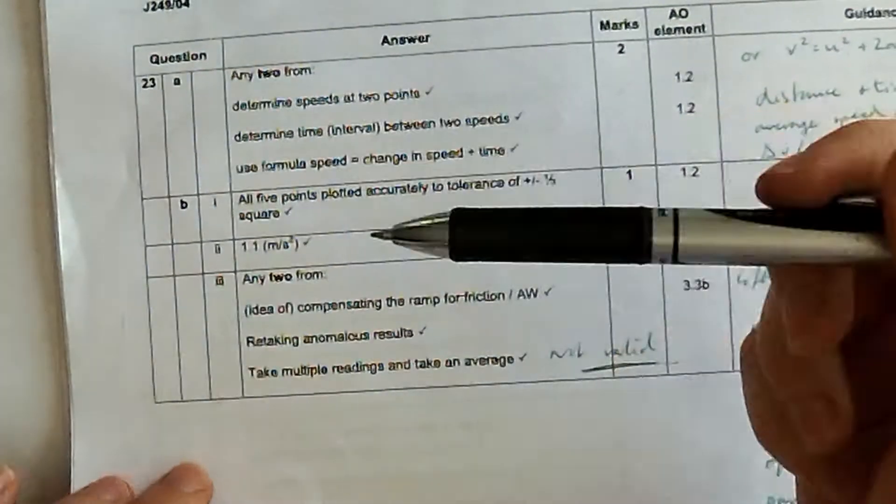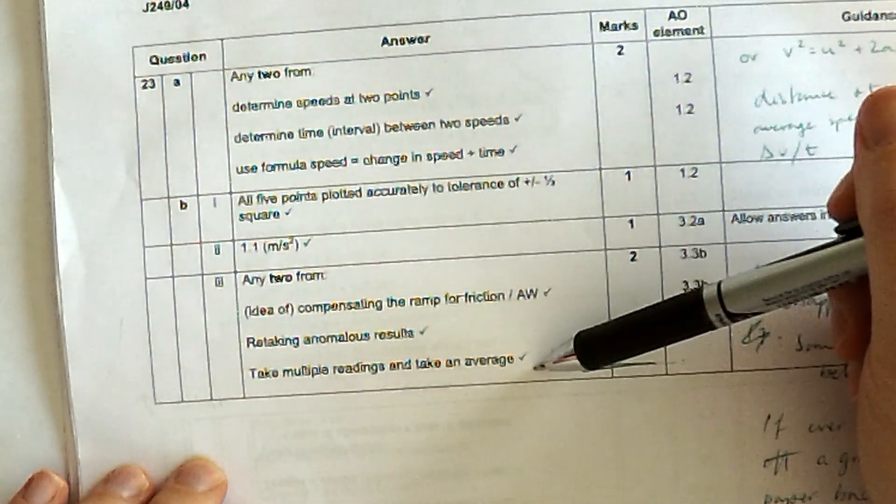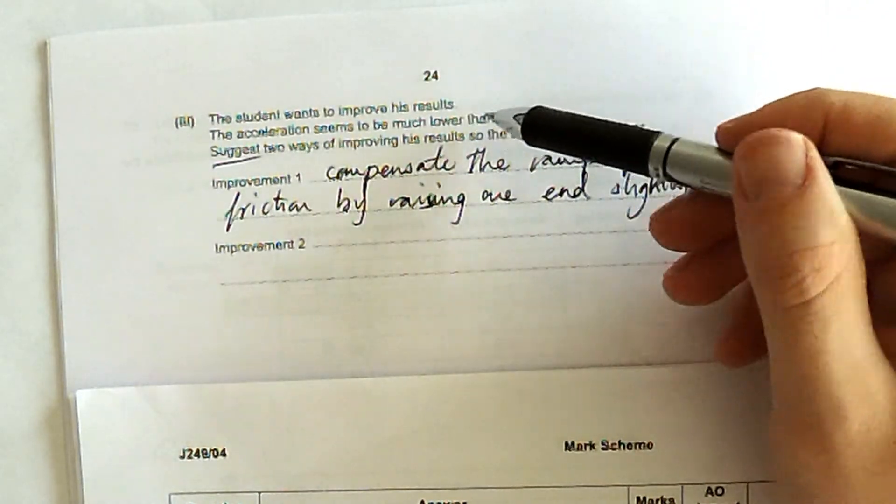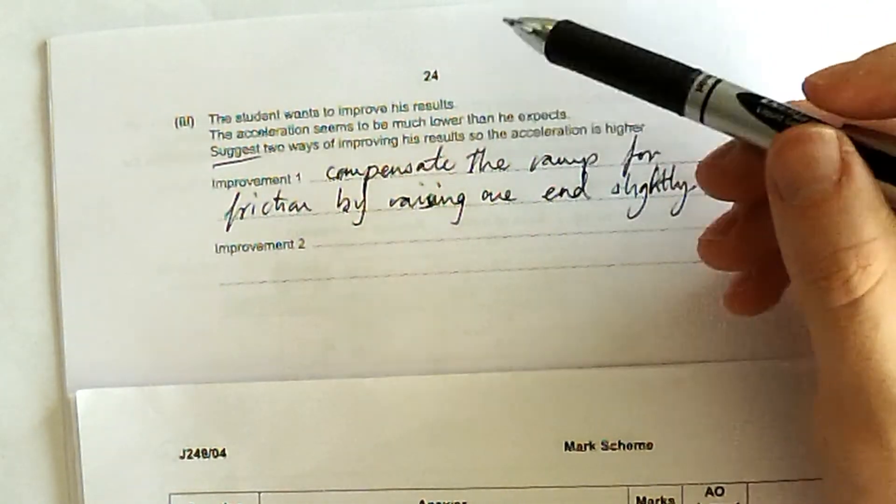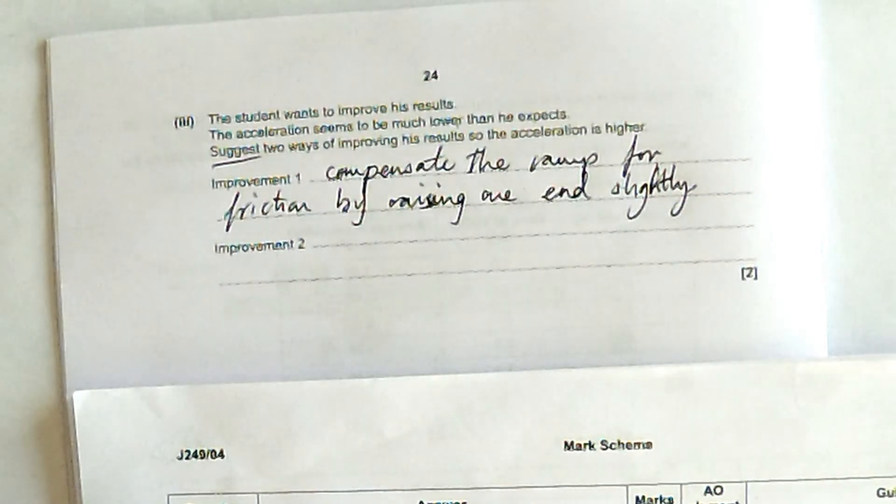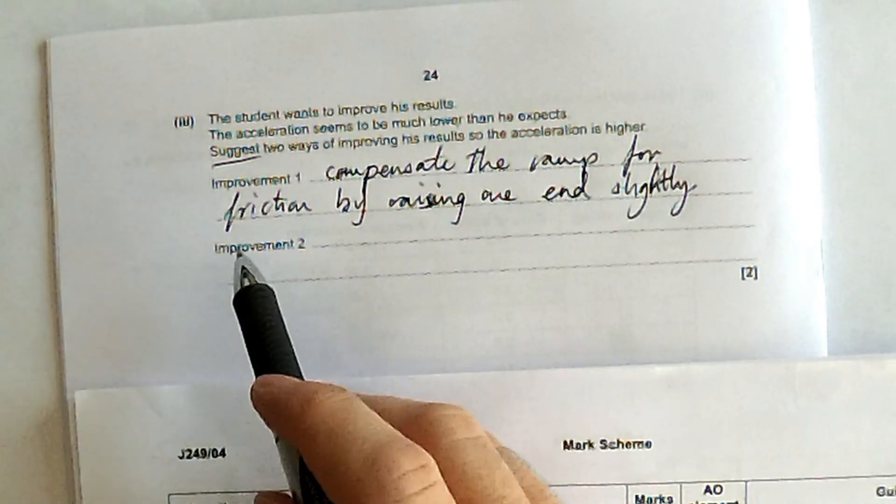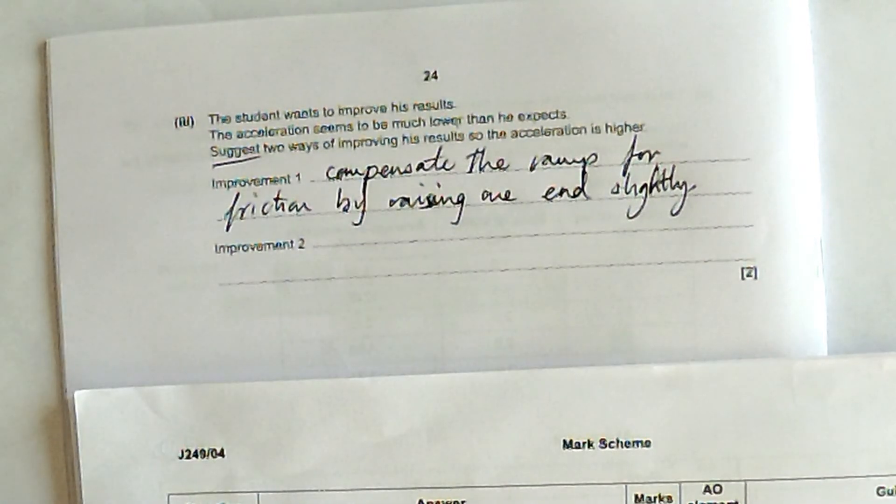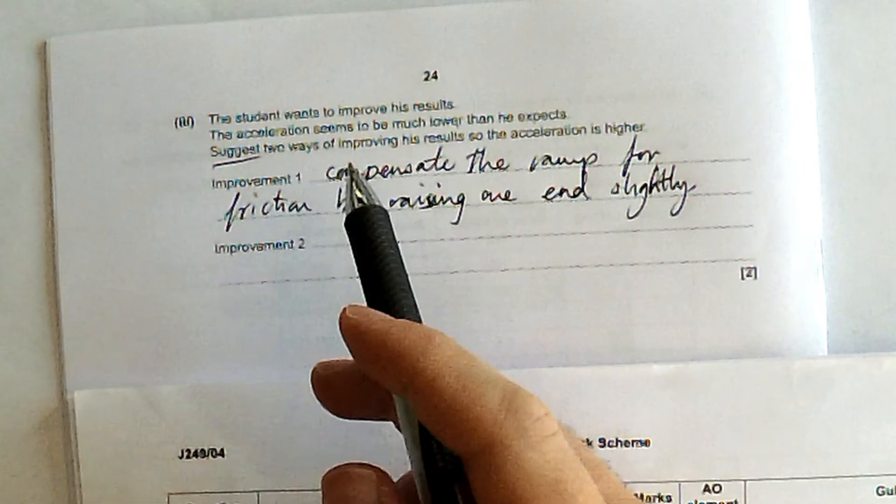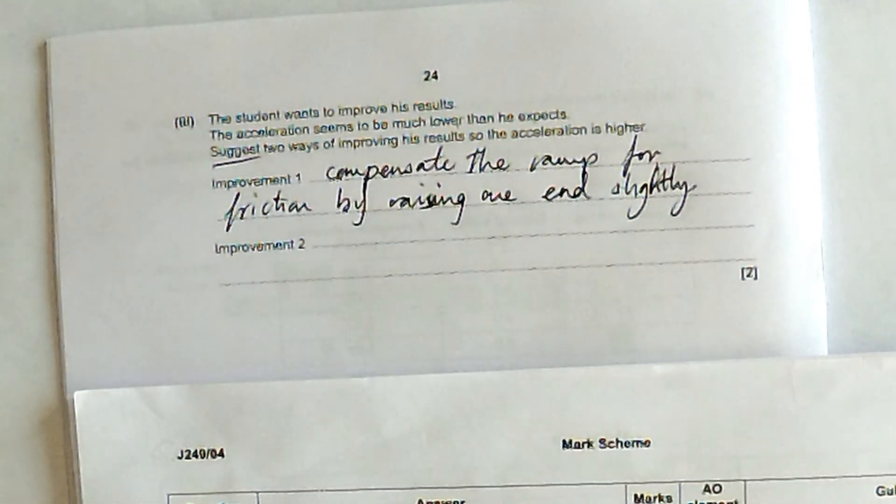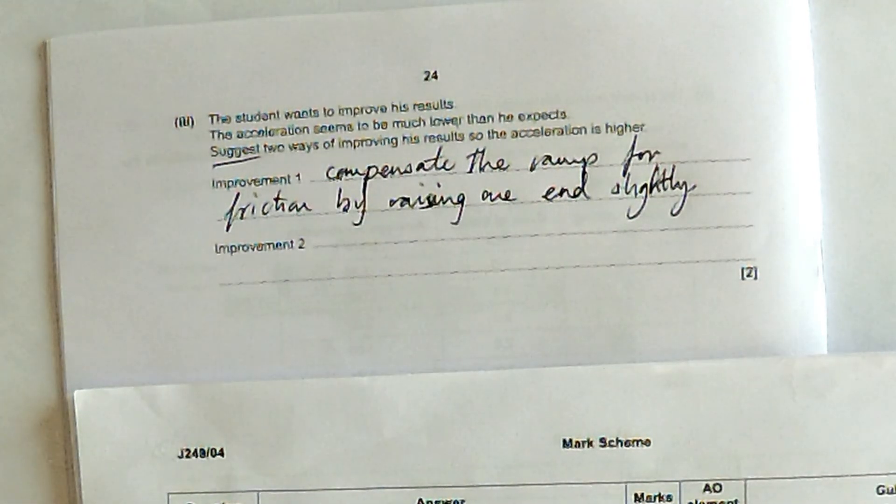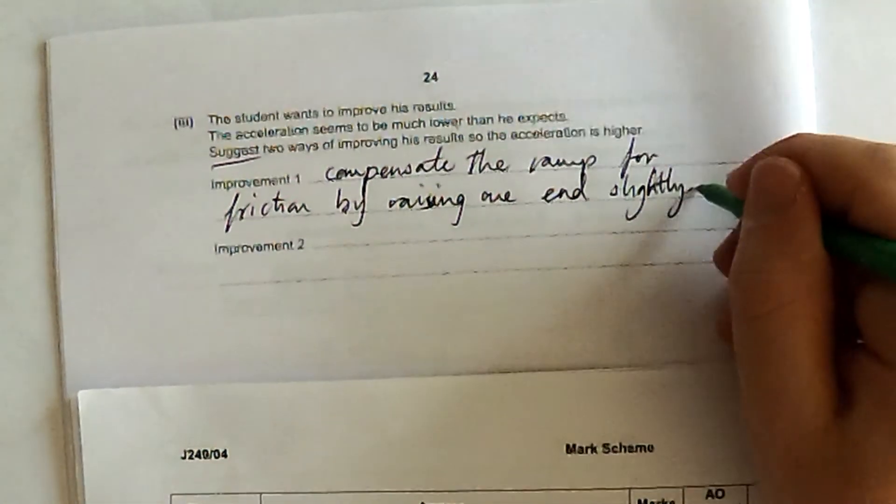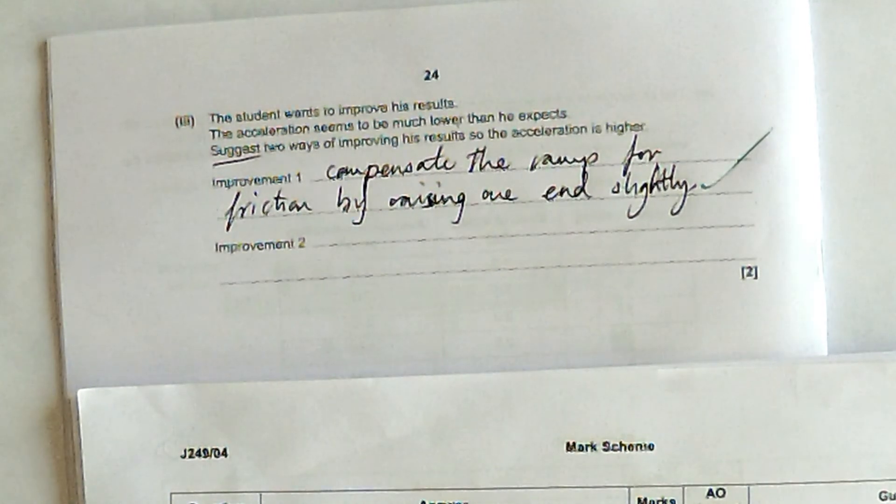I really think that because, well, these only get rid of random errors, and random error doesn't make it higher than it was before. A random error doesn't make something much lower than you expect. The friction is definitely the case. The friction is going to make the acceleration lower than what it should be, but the taking out anomalous results or taking multiple readings will only reduce random errors. So I'm not even going to write them down because I don't agree with the mark scheme that they've produced for this specimen paper.